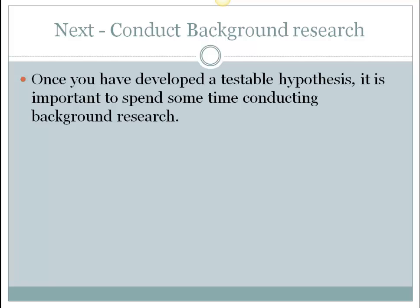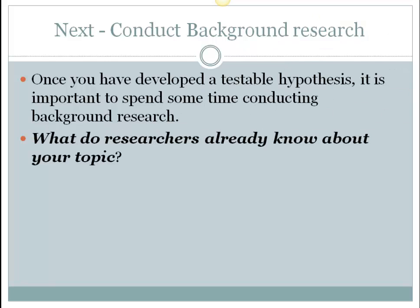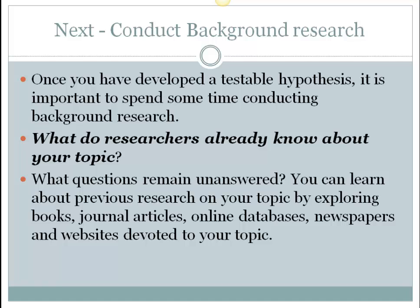Our next step, once we have those statements, is to conduct some background research. At this point, we have our independent and dependent variables operationalized, our theory, our hypothesis, and our null hypothesis. Now we have to conduct background research to find out what other researchers already know about our topic — what has already been discovered and supported, and what questions remain unanswered. We can look at recent books, journal articles, online databases, and websites devoted to our topic to find this information.